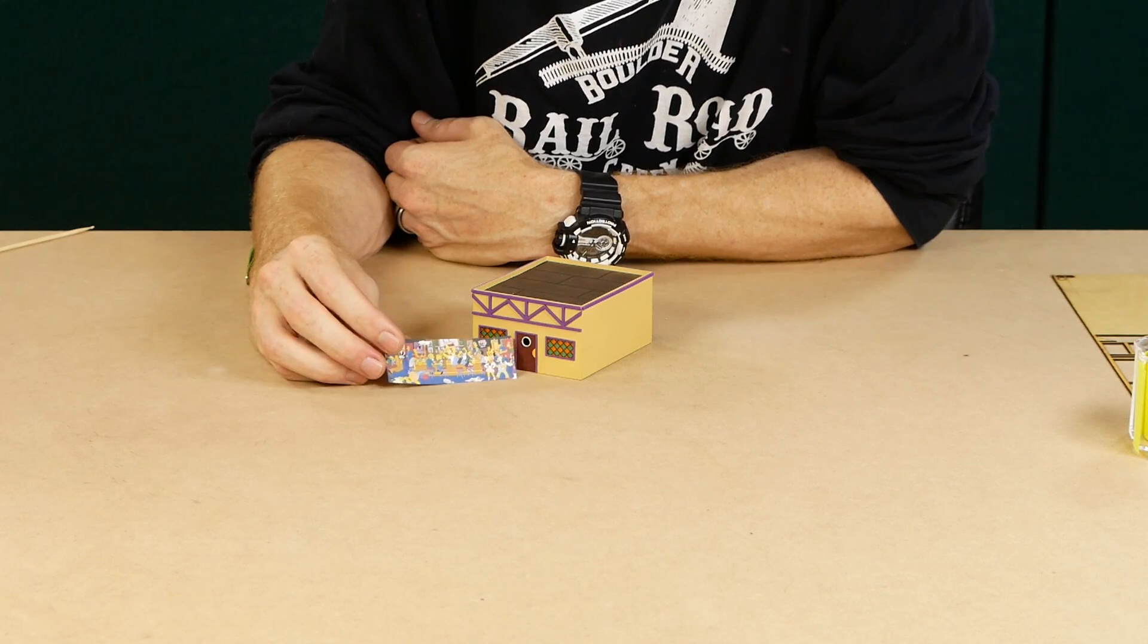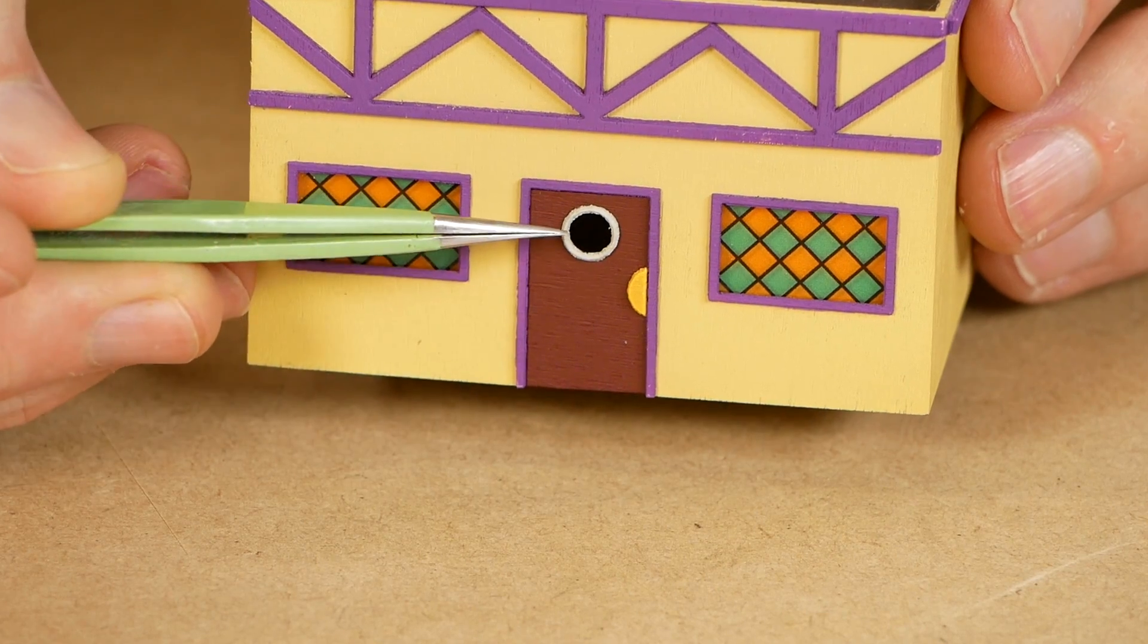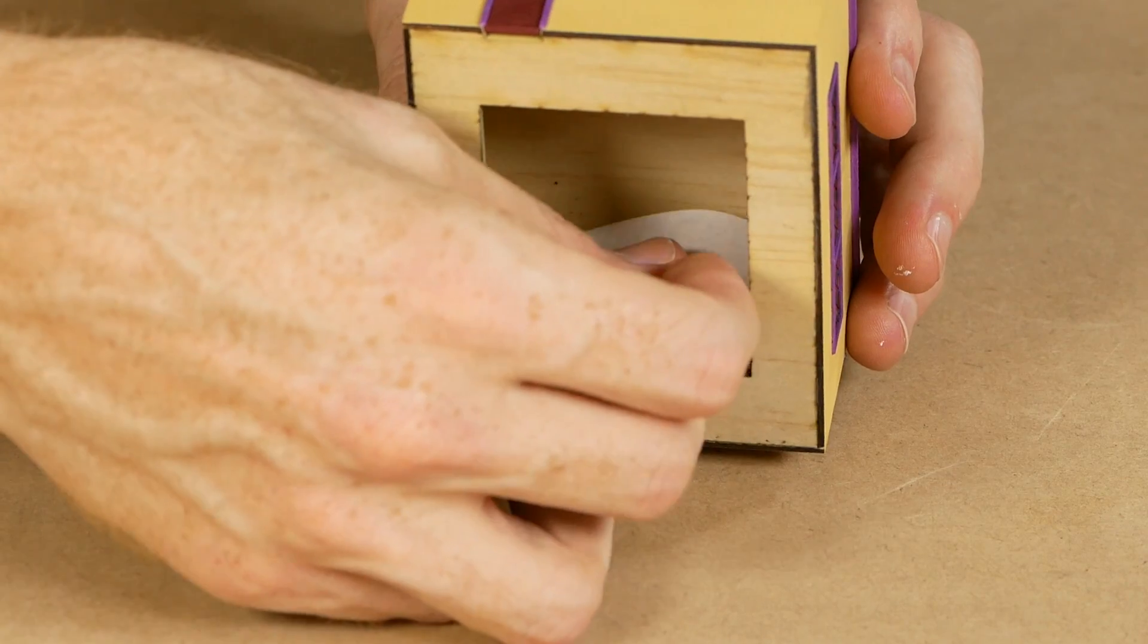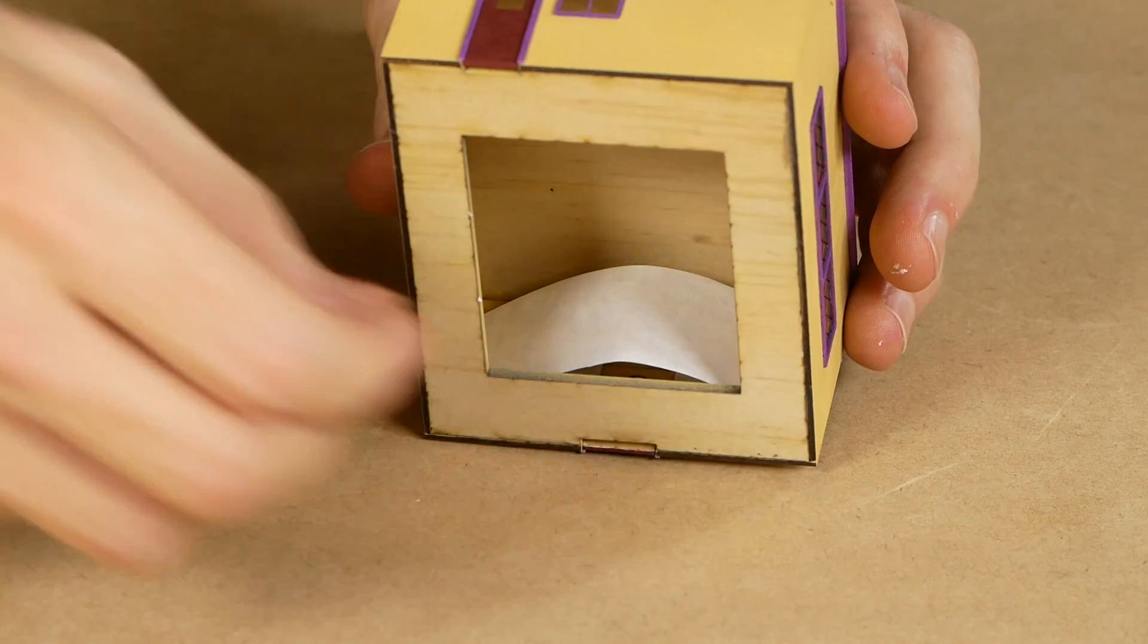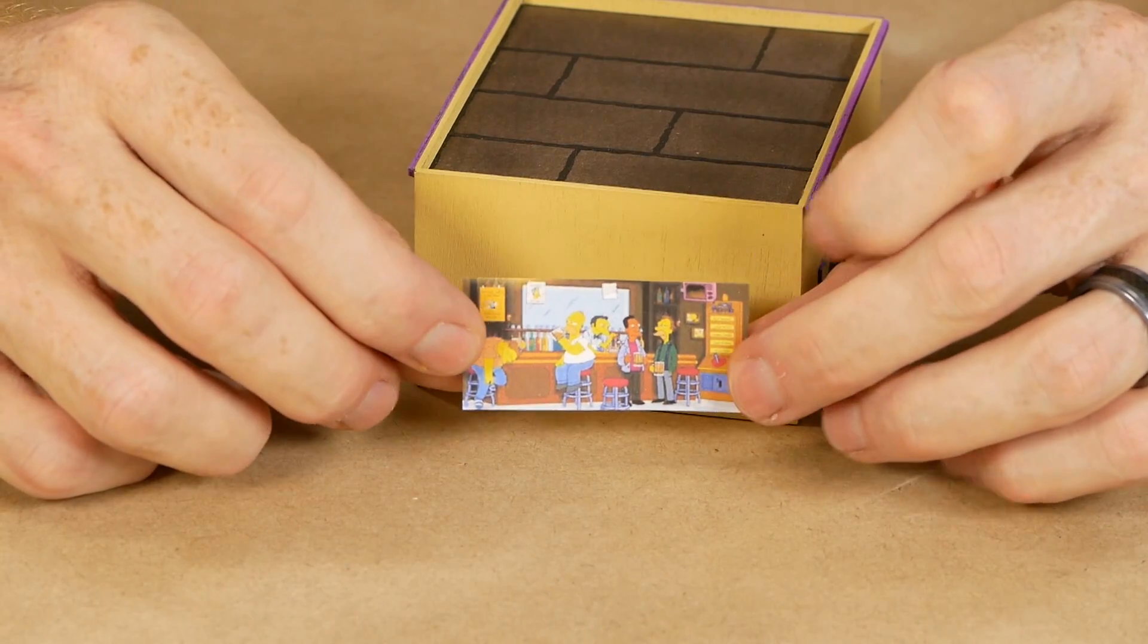For a bit of fun I printed a picture of the inside of Moe's Tavern to place behind the front door so that when you look through the hole you'll see some action on the inside. I did the same for the rear window as well.